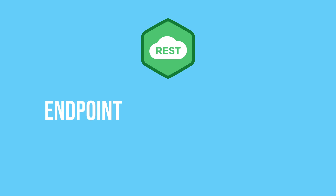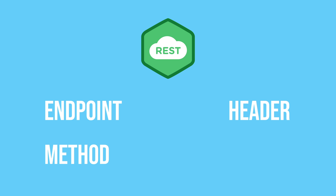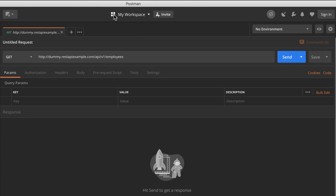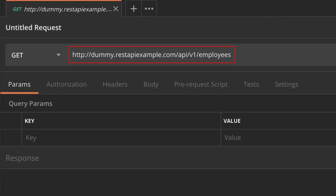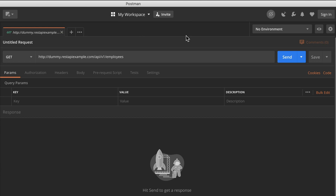A REST call consists of: the endpoint, similar to the HTTP path mentioned earlier; the method, which defines the kind of action — such as GET, POST, or DELETE; the header, which contains information about the type of request like whether we're using JSON or XML; and the body, which would be something like a JSON object. To demonstrate, I'm using Postman, a tool you can use to make API calls, very similar to the browser.